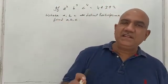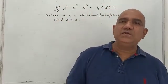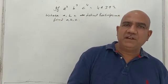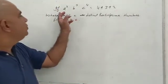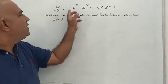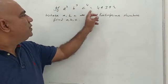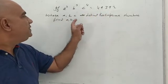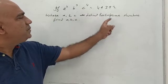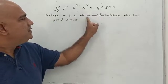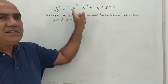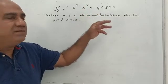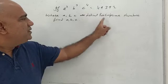Hello students, this is yet another good question on number system in Class 9, Chapter 1. The question goes like this: if a² × b³ × c⁴ = 49392, where a, b, c are distinct positive prime numbers. Note the word 'distinct' — that means a ≠ b, b ≠ c; they are all different numbers.